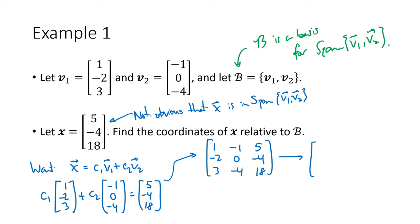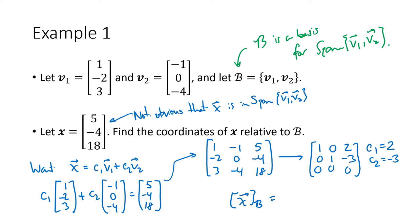Using technology to row reduce that, I get the matrix with rows 1, 0, 2; then 0, 1, −3; then 0, 0, 0. So my solution is c1 = 2 and c2 = −3. My coordinates of x in basis B are (2, −3). I got two scalars. Even though x is in R3, the coordinates of x are two values because my basis has two vectors — one entry in the coordinate vector for each vector in the basis.